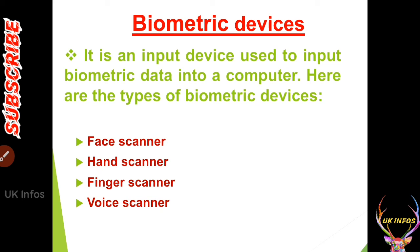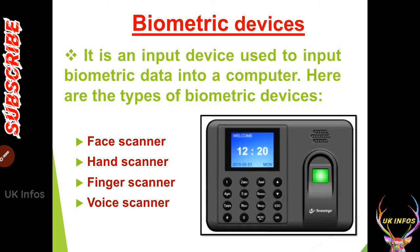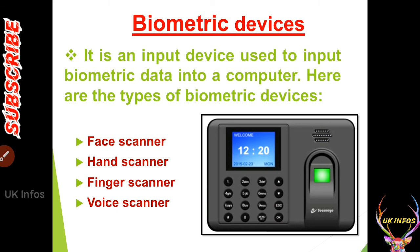Biometric devices are input devices used to input biometric data into a computer. A best example is the fingerprint scanner in smartphones. Types of biometric devices include: face scanner (the device reads your face and automatically unlocks), hand scanner (you place all fingers, like when registering for an Aadhaar card), finger scanner (fingerprint), and voice scanner (your voice can be used to authenticate).